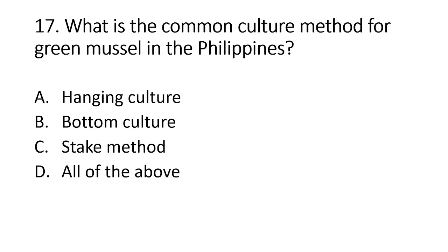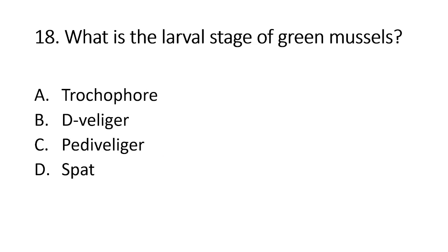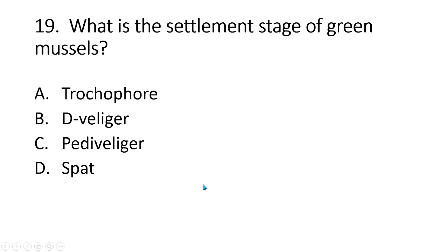Number 17. What is the common culture method for green mussel in the Philippines? A. Hanging culture. B. Bottom culture. C. Stake method. D. All of the above. The answer is letter D, all of the above. Green mussel culture in the Philippines can be done using various methods, including hanging culture, bottom culture, tray, wigwam, and raft culture. Number 18. What is the larval stage of green mussels? A. Trochophore. B. Veliger. C. Pediveliger. D. Spat. The answer is letter A, the larval stage of green mussels is called trochophore, which typically lasts for 2–3 days.